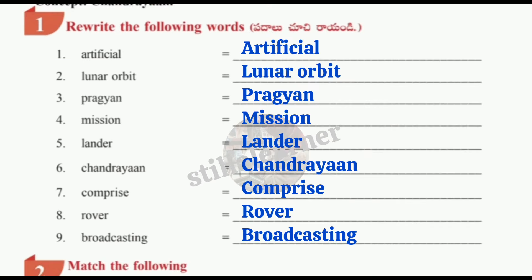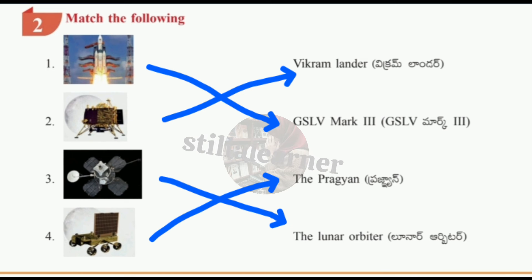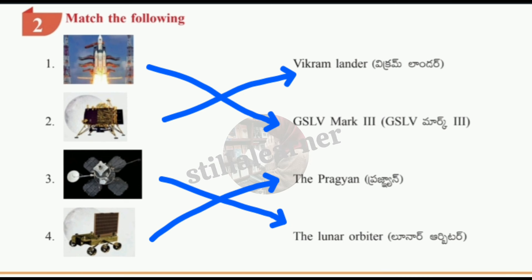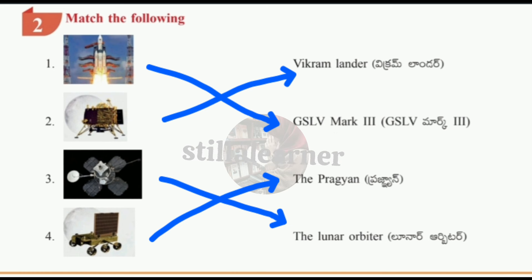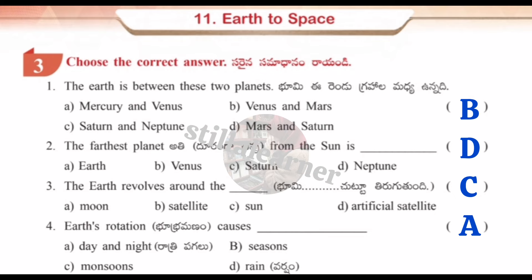Worksheet 8, match the following figures: First figure is GSLV Mark III. Second is Vikram Lander. Third is the Lunar Orbiter. Fourth is Pragyaan. Then choose the correct answers.